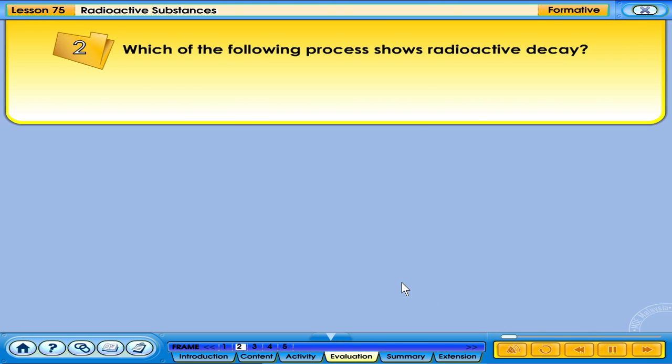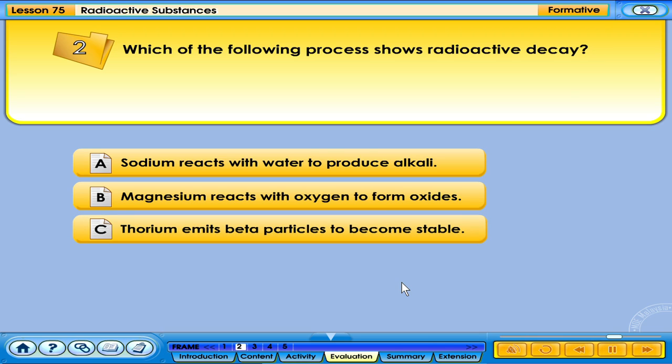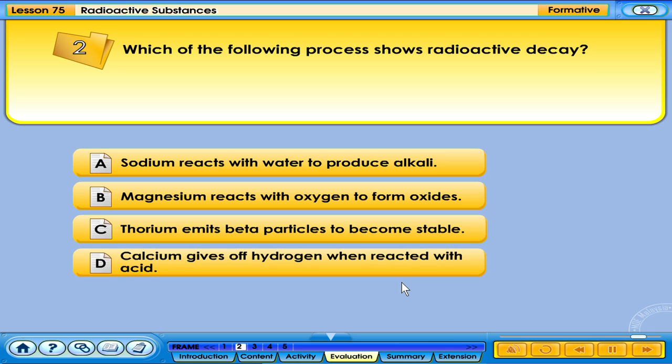Which of the following process shows radioactive decay? A. Sodium reacts with water to produce alkali, B. Magnesium reacts with oxygen to form oxides, C. Thorium emits beta particles to become stable, D. Calcium gives off hydrogen when reacted with acid.